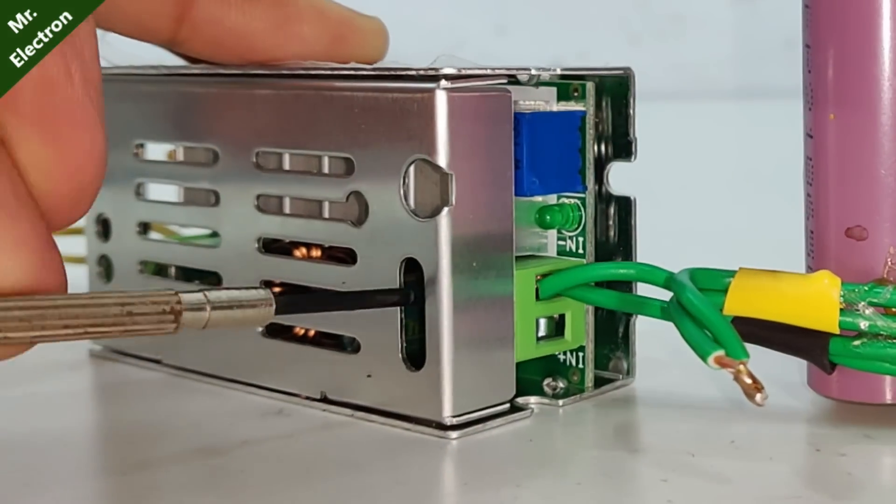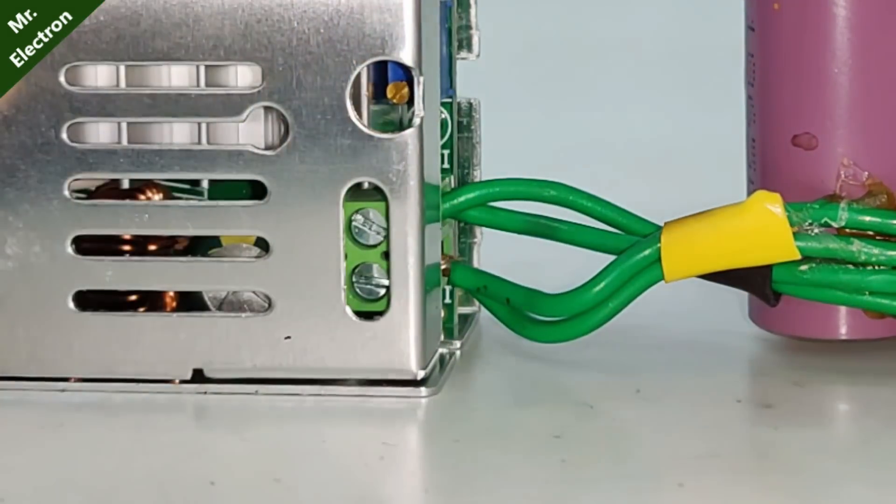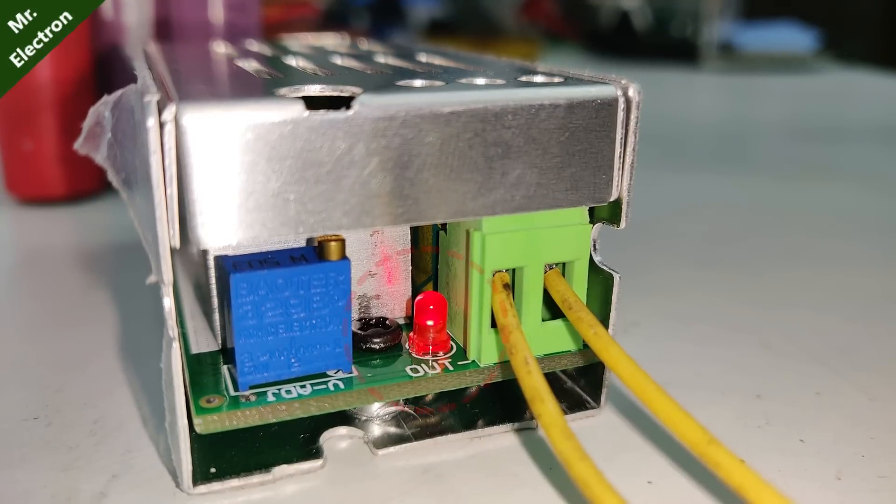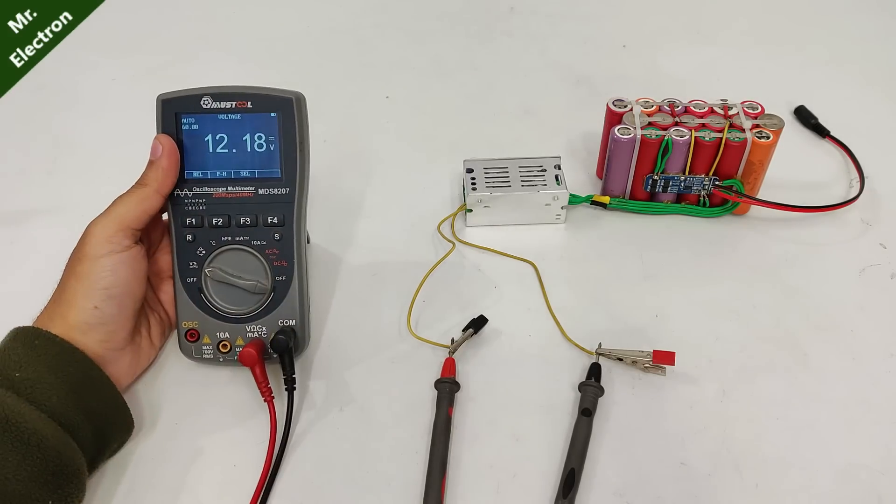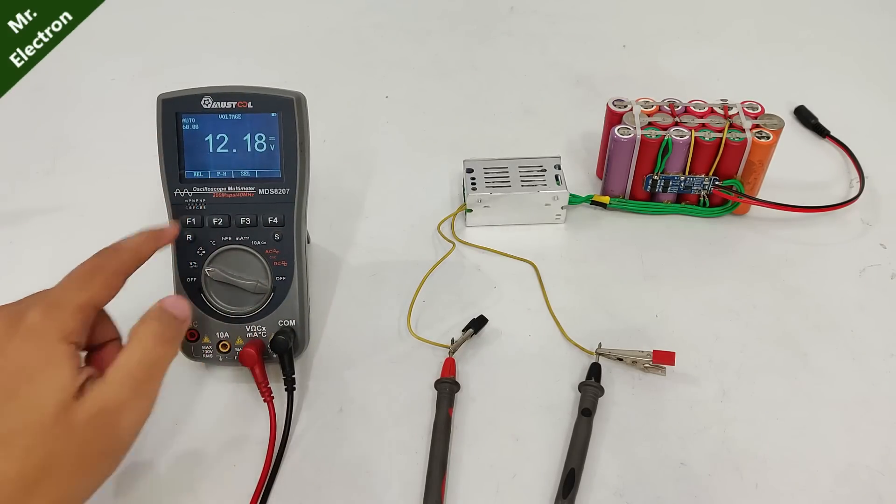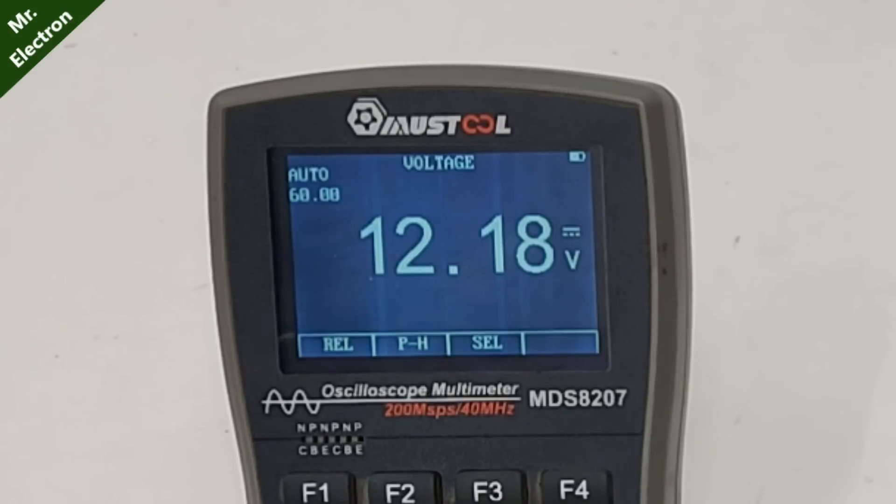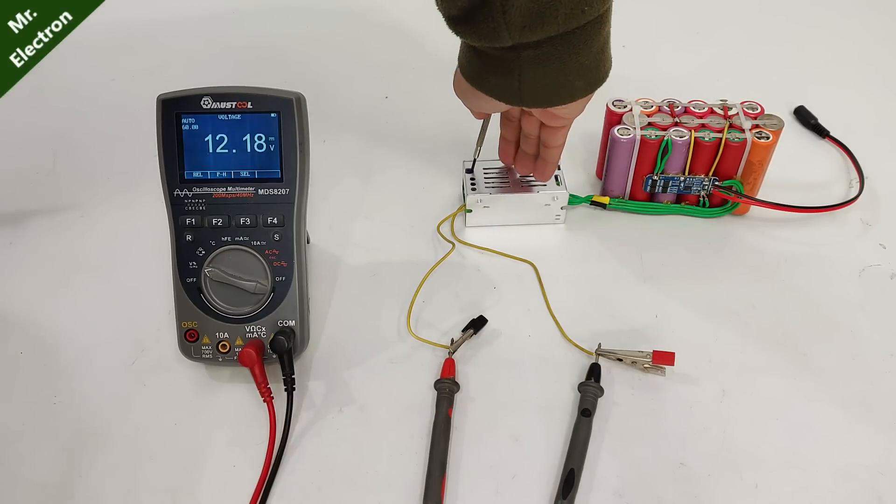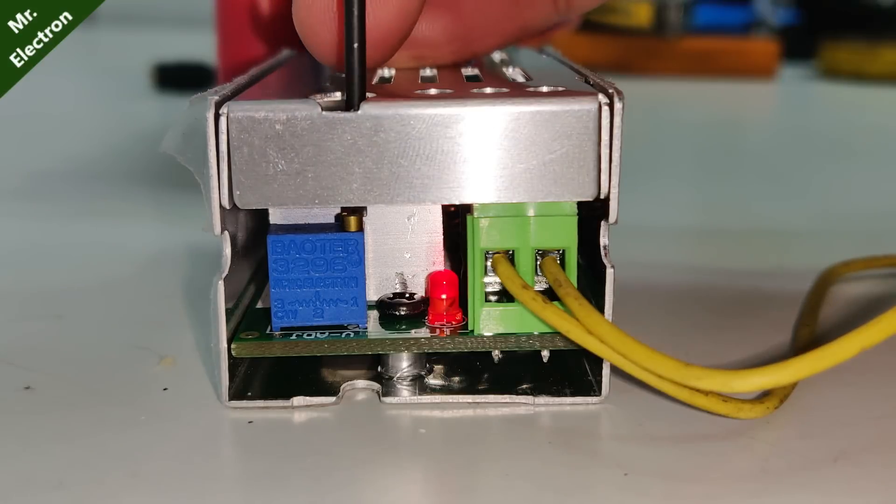After successful connection you will see that the red LED at the output is glowing. Now to the output I have connected this multimeter and default voltage is 12.18 which we can change with the potentiometer knob and I'm going to set it to 14 volts.